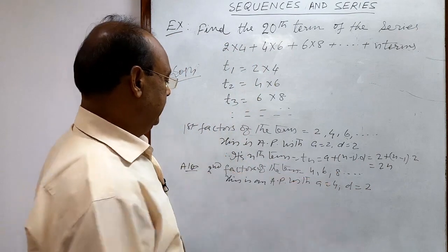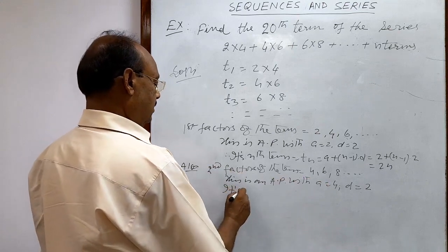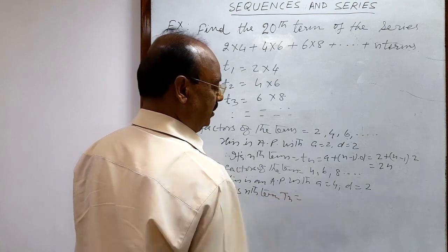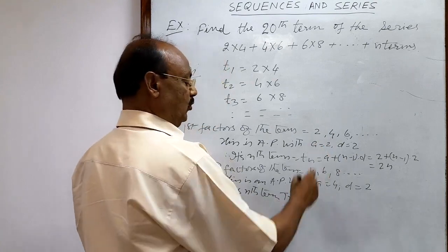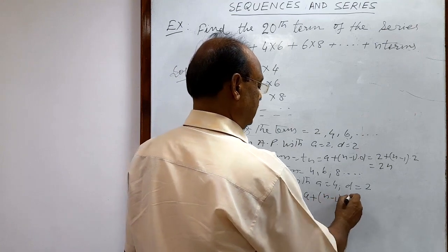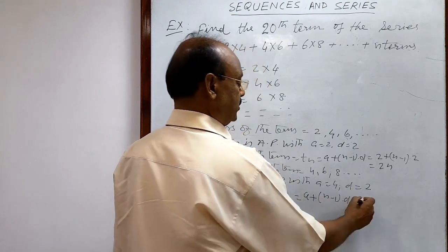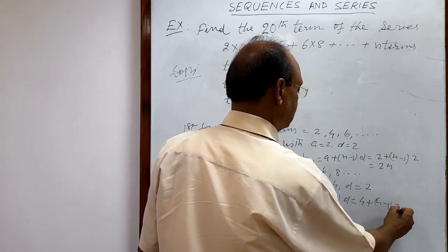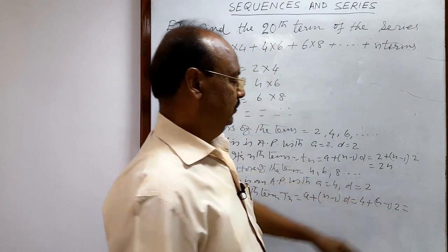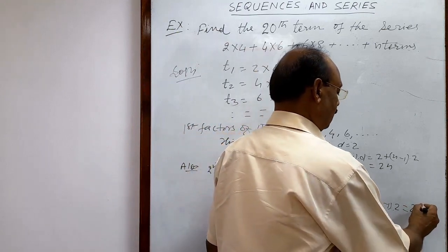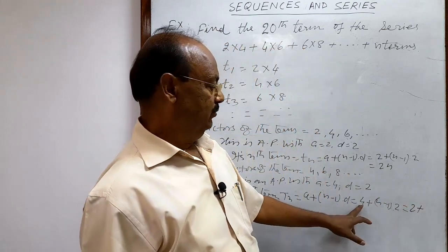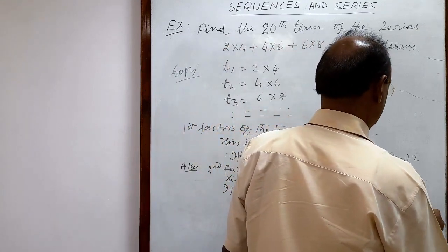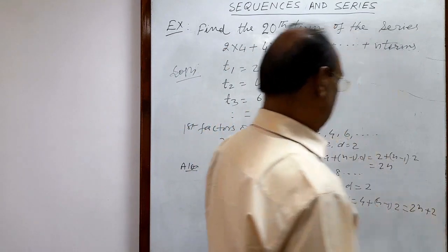For the second factors, the nth term is found using the same formula: a + (n−1)d = 4 + (n−1)×2, which simplifies to 2n + 2.